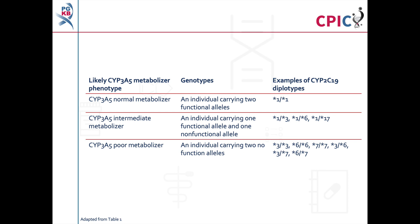Star alleles are characterized by their rate of function relative to the star 1 allele, which is designated as a normal function allele. Diplotypes of CYP3A5 star alleles can be assigned to a metabolizer phenotype.